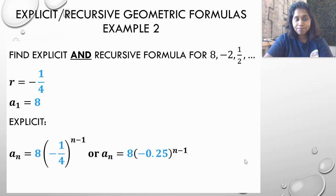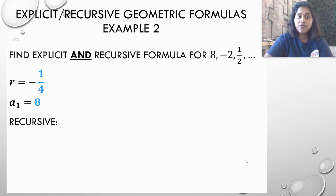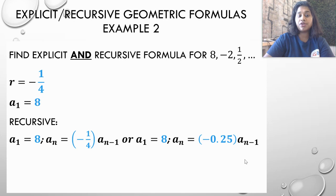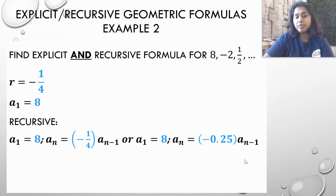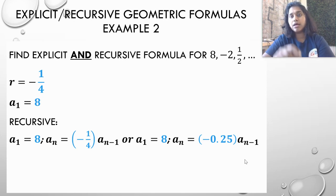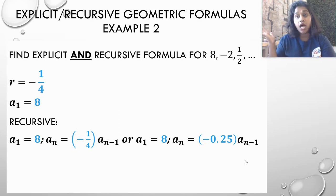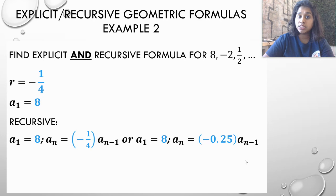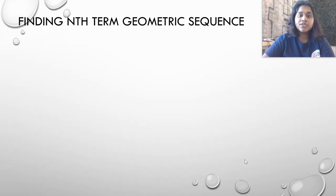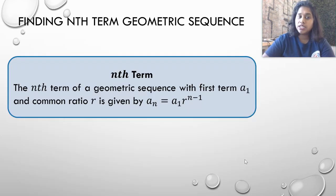For the recursive formula, we declare the first term and then plug in our ratio multiplied by a sub (n−1), tacking that on every single time. Those are our explicit and recursive formulas — yes, it really is that easy.